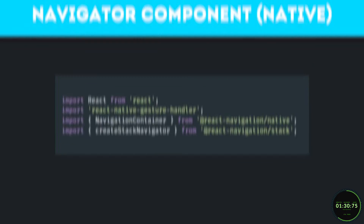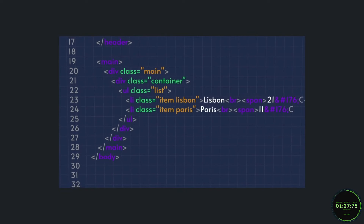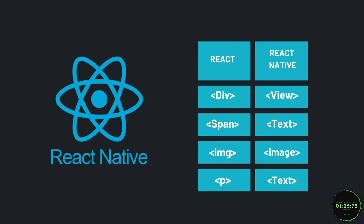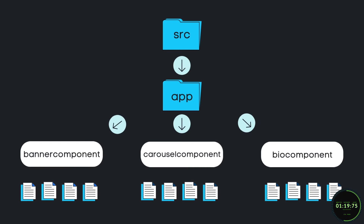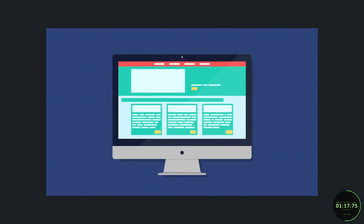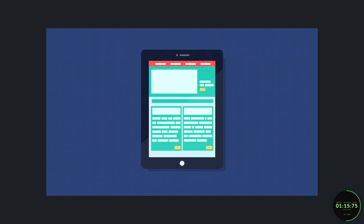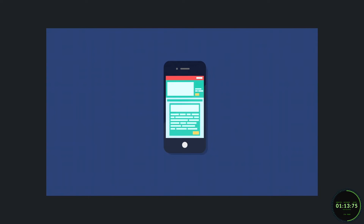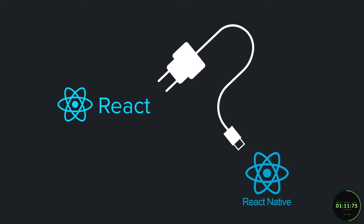React Native also doesn't use conventional HTML. It relies on specific commands for component creation. While they do have their differences, React Native still embodies React at its core. They both have component-based architecture, they both have the capabilities of creating interactive user interfaces, and most importantly ReactJS is the JavaScript library powering React Native.